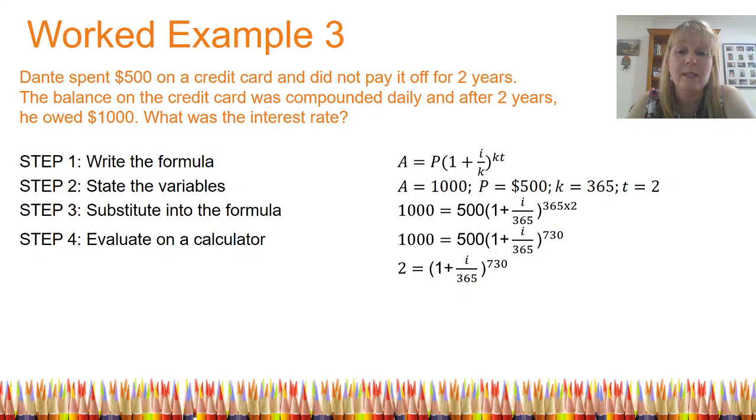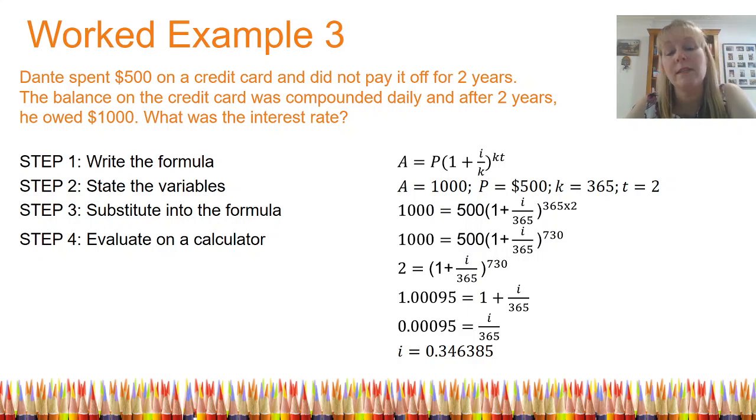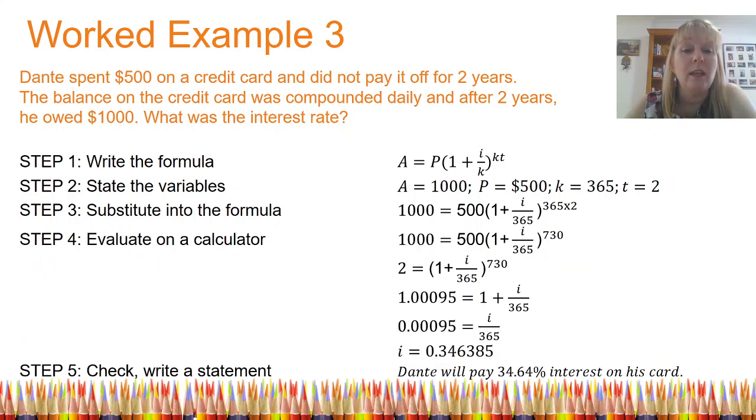And I'm left with 2 on the left hand side, and 1 plus i over 365 on the right hand side raised to the power of 730. My next step is to take the 730th root on my calculator of both sides, which means 2 to the root of 730 gives me 1.00095 equals 1 plus i over 365. Now you might be tempted to multiply both sides by 365, but you can't do that yet. Firstly, you've got to subtract 1 from both sides, and then you can multiply both sides by 365. That leaves me with i is equal to 0.34 and all the other digits. Now remember, the interest rate should be a percentage. So I need to multiply that by 100 to get the interest rate.